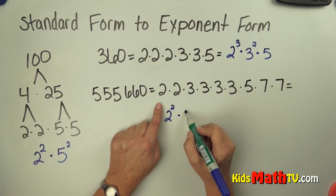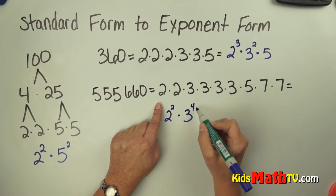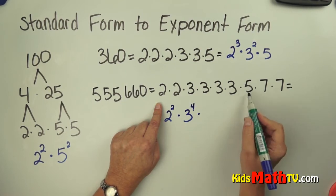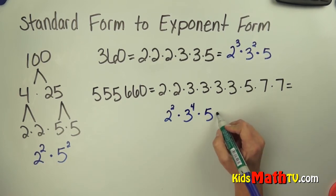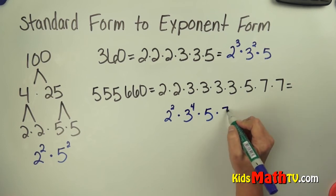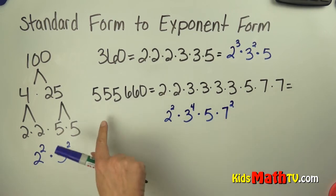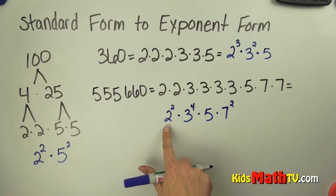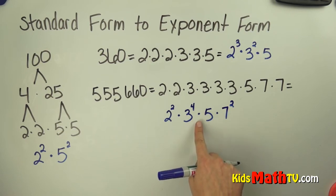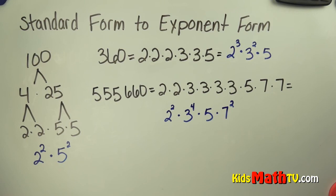Times I see another base of 3. How many 3's are there? 1, 2, 3, 4 — this time it's an exponent of 4. Times the next base, which is 5. How many? There's just 1, so I leave it as 5. And I see another base of 7, and there are 2 sevens, so 7 has an exponent of 2. So 555,660 in exponent form is 2 to the 2nd power times 3 to the 4th power times 5 times 7 to the 2nd power. That's the end of our lesson on standard form to exponent form.